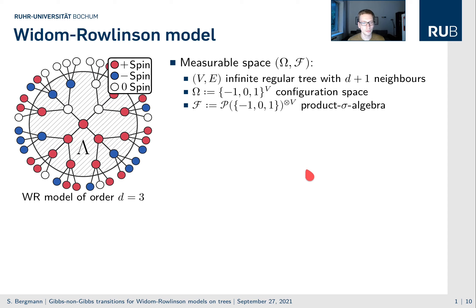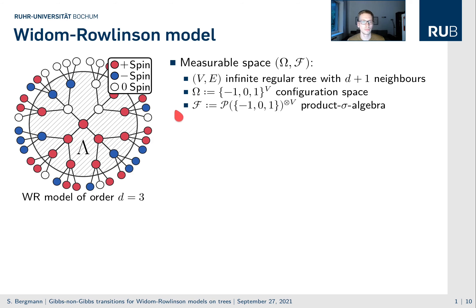We start with a Cayley tree of order d, that is an infinite regular tree where each vertex has d plus one neighbors. Here is the case d equals three depicted, where each vertex has exactly four neighbors. Each of these vertices can take one of three values: it can be occupied by a plus or minus spin, or it can be empty, indicated by a zero spin.